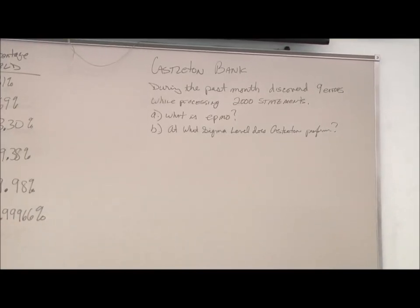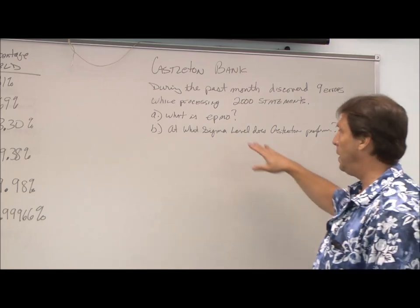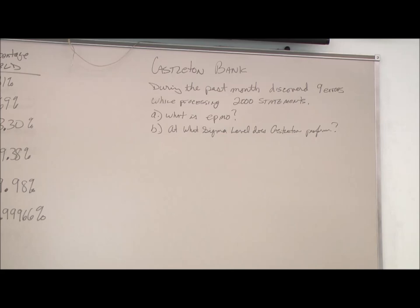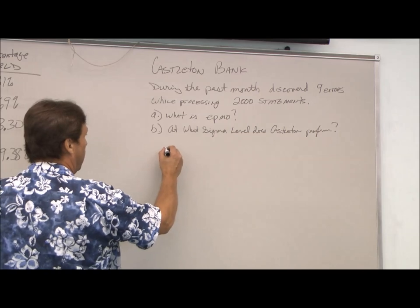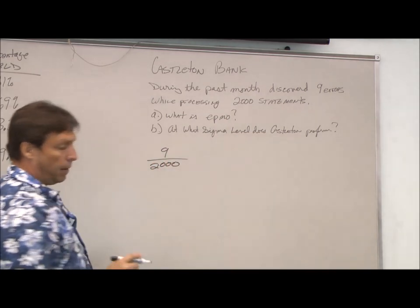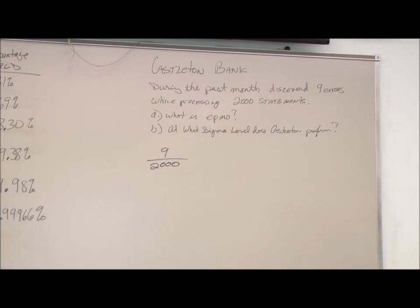Let's look at a quick example to see how this all fits together. Let's pretend we're Castleton Bank. During the past month, we discovered nine errors when processing 2,000 statements. The first thing we want to do is find our EPMO. EPMO is the same as DPMO, it's just for service. So we had nine errors. We had 2,000 statements. So that's our defects right there.